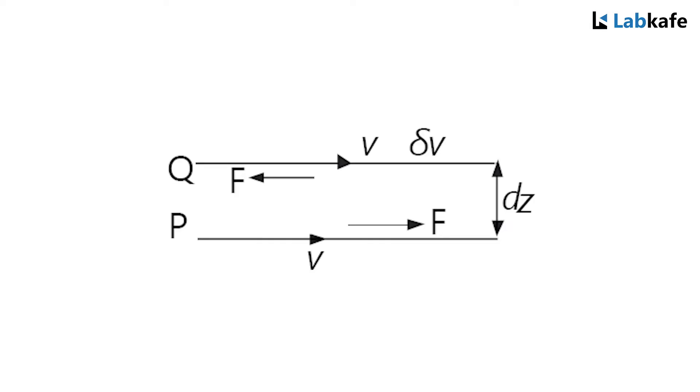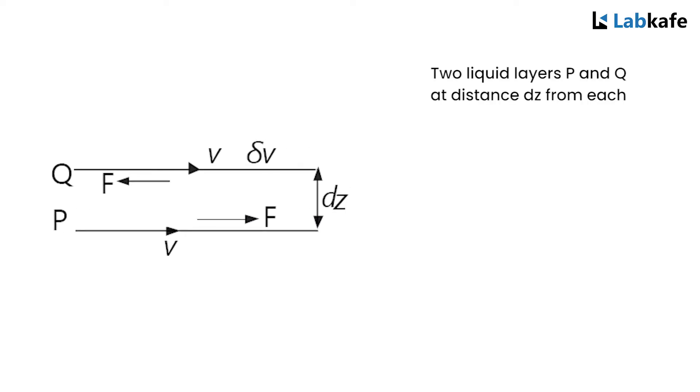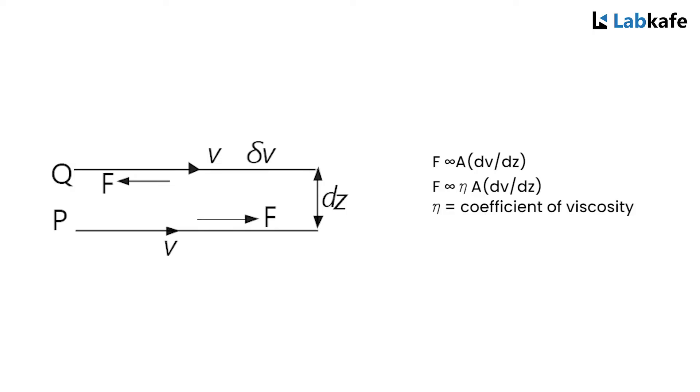Here we consider two liquid layers P and Q at a distance dz from each other as shown in the figure. Two forces F act between two layers. One force F tends to speed up layer P which is moving at lesser velocity, while the reaction force F acts on Q to reduce its speed. Hence, F is proportional to A times dV by dz. Therefore, F equals eta times A times dV by dz, where eta is the coefficient of viscosity and A is the area of two layers.